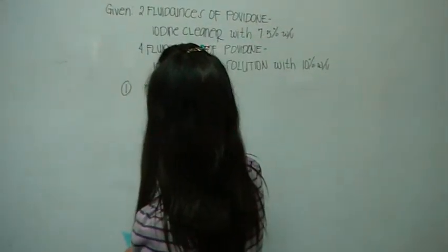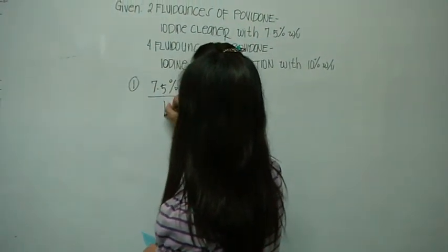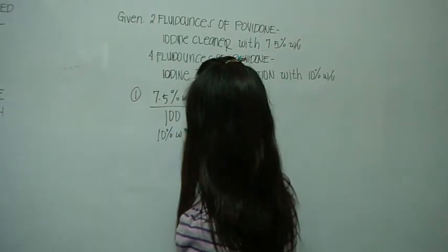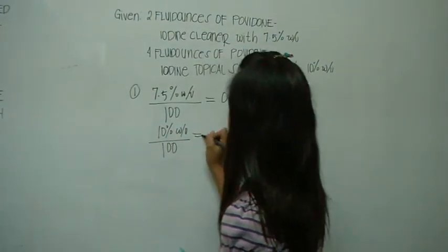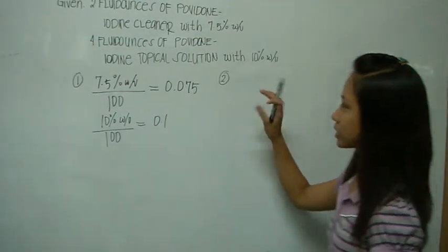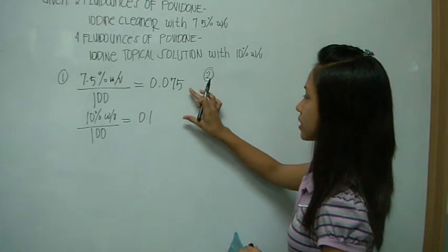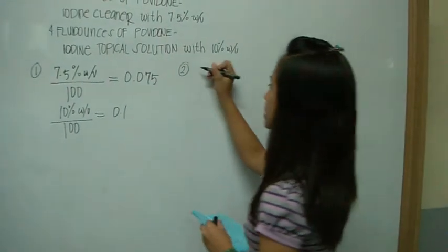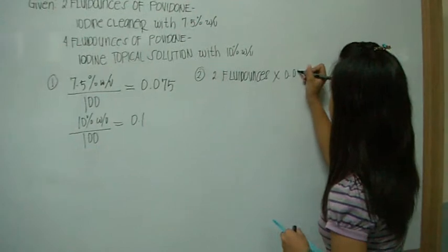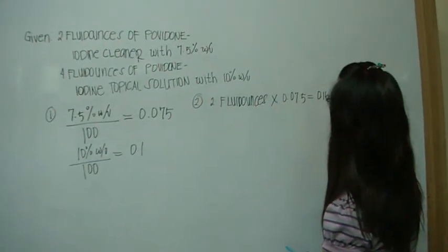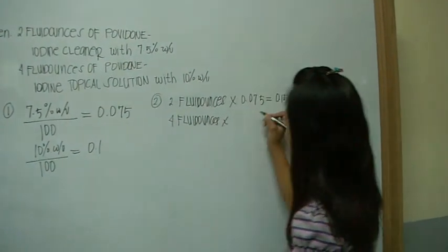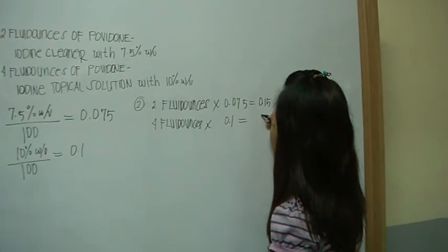7.5% w/v divided by 100 is equal to 0.075. And 10% w/v divided by 100 is equal to 0.1. The next step: the corresponding quantities must multiply the decimal fractions that we got. 2 fluid ounces times 0.075 equals 0.15, and 4 fluid ounces times 0.1 is equal to 0.4.